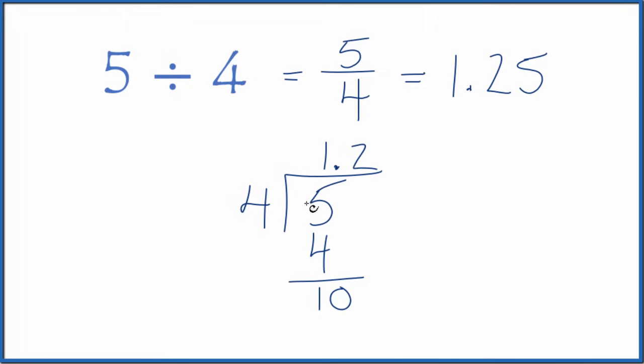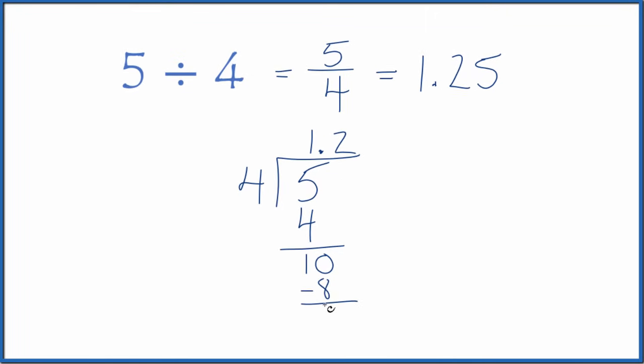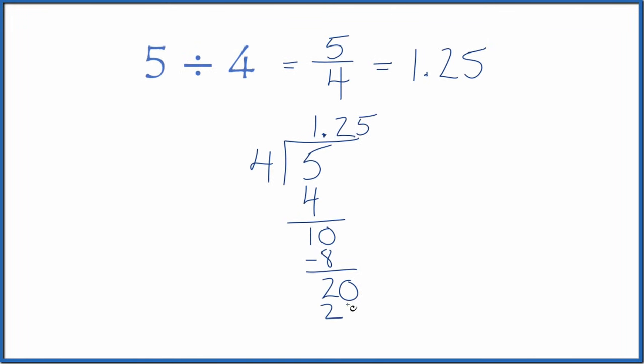Now, 2 times 4, that's 8. 10 minus 8 is 2. Let's put a 0 here. We'll move over. 5 times 4 is 20. We subtract, no remainder.